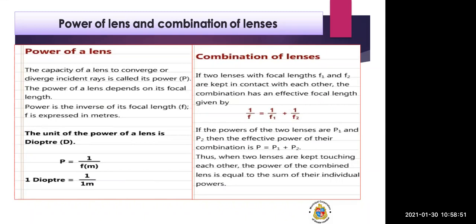If two lenses are used, there are two focal lengths and two powers. The effective power of their combination is P equals P1 plus P2. When two lenses are kept touching each other, the power of the combined lens equals the sum of their individual powers. We take individual focal lengths and individual powers and add them to get effective focal length or effective power.